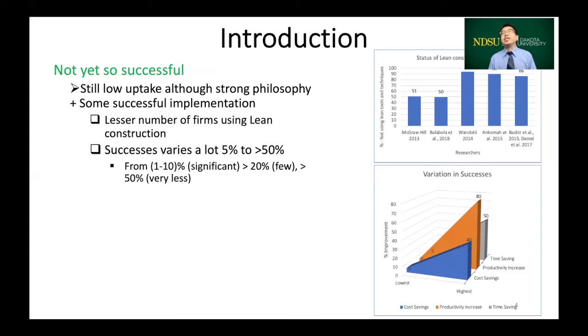Also, there is a lot of variation among successful implementations. Some savings can be 5% from some firms, but some other firms may have more than 50% of savings. However, the average lean firms have received around 1% to 10% of savings, whereas very few construction companies were able to achieve more than 20% cost and time reduction.